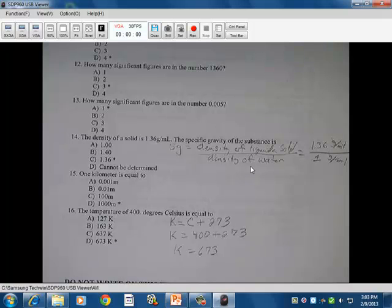15. 1 kilometer equals 1,000 meters. Answer D there. Temperature from 400 degrees Celsius is equal to how many Kelvin? So Kelvin equals Celsius plus 273. So you have 400 plus 273 gives you 673 Kelvin is the answer there.